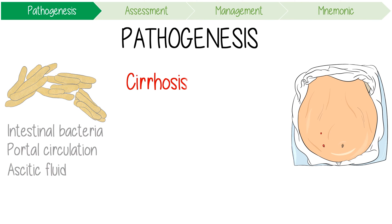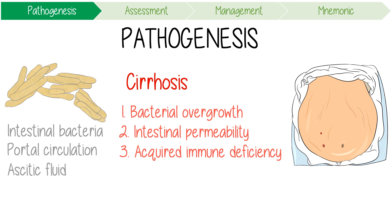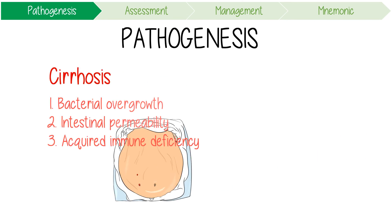Liver cirrhosis predisposes people to this bacterial translocation because of three reasons. Firstly, cirrhosis can trigger bacterial overgrowth in the gut. Secondly, portal hypertension causes increased intestinal permeability to the enteric bacteria. Finally, cirrhosis causes an acquired immune deficiency as it reduces the production of proteins in the complement system.